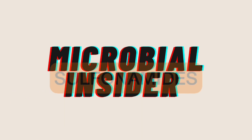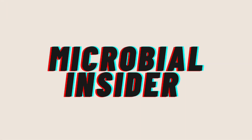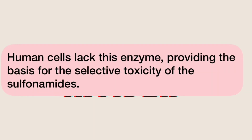Sulfonamide and related compounds, collectively referred to as sulfa drugs, are structurally similar to para-aminobenzoic acid, a substrate in the pathway for folic acid biosynthesis. Because of this similarity, the enzyme that normally binds para-aminobenzoic acid preferentially binds sulfa drugs, resulting in competitive inhibition. Human cells lack this enzyme, providing the basis for the selective toxicity of sulfonamide.